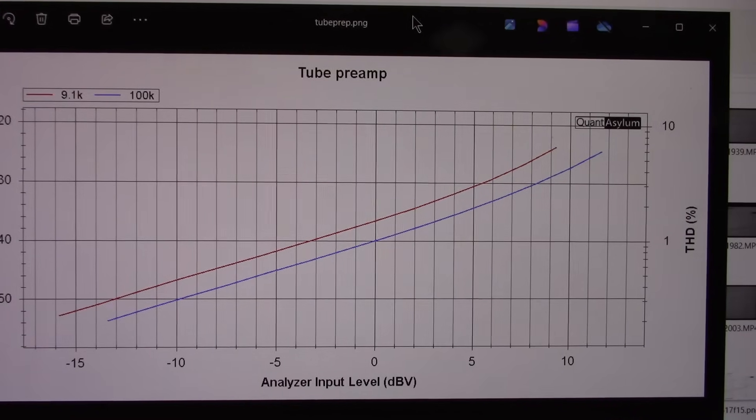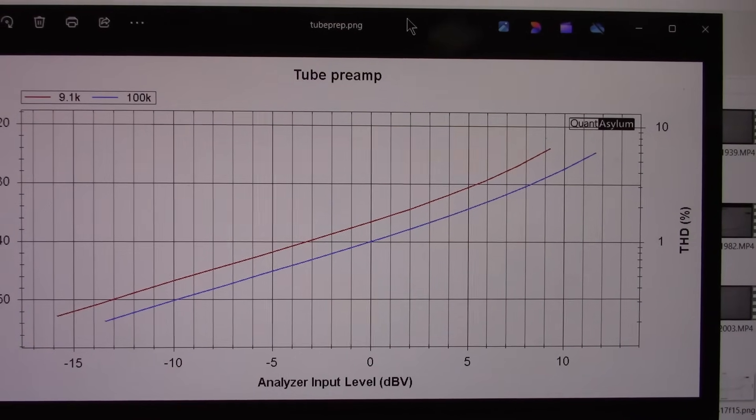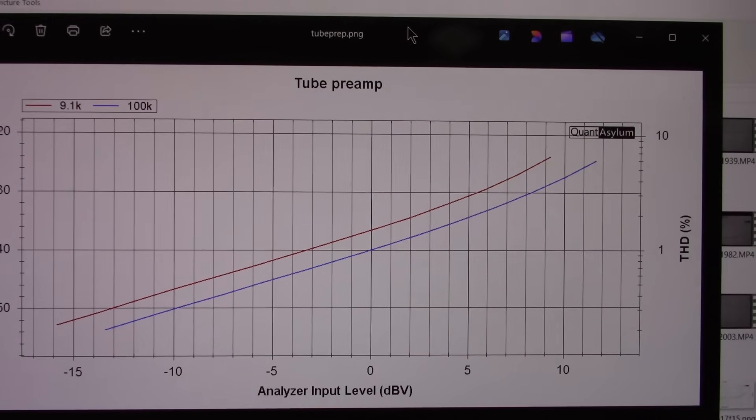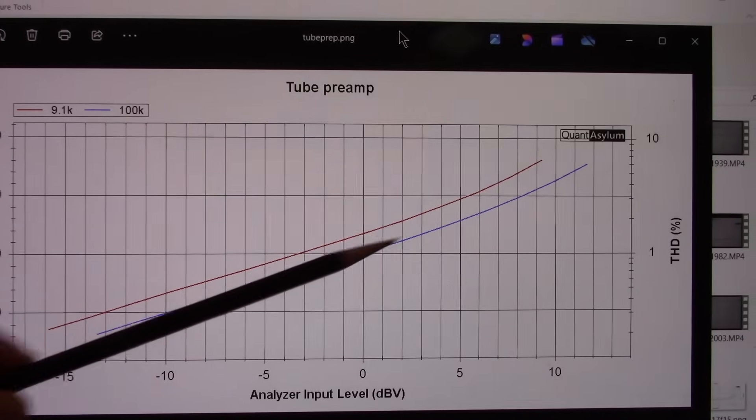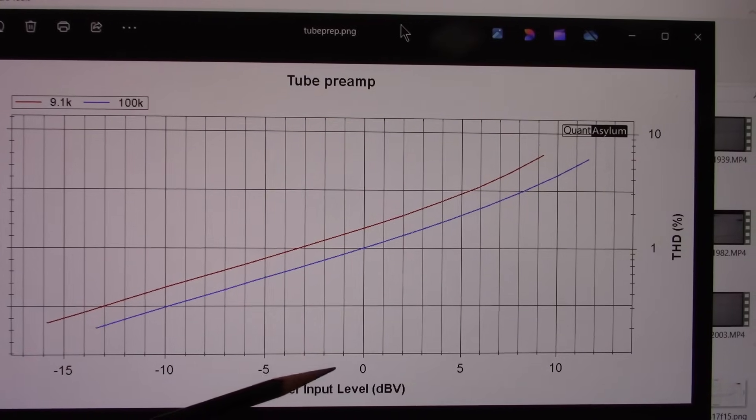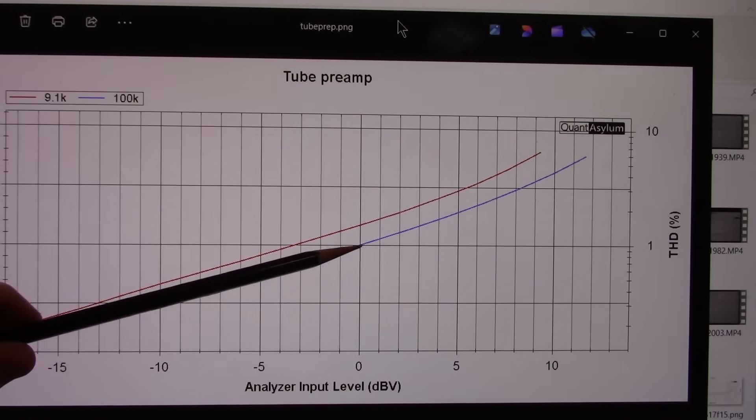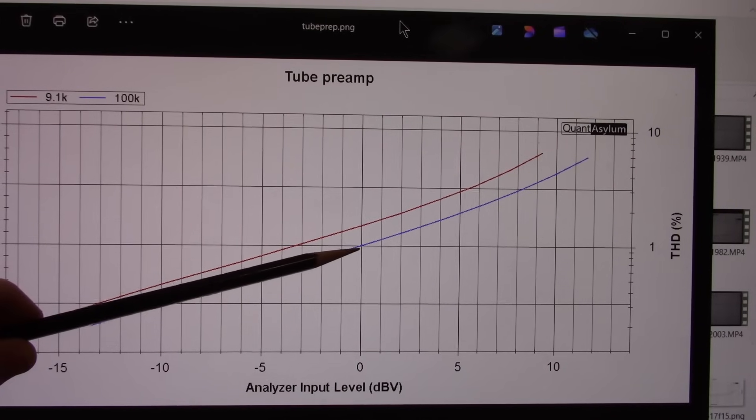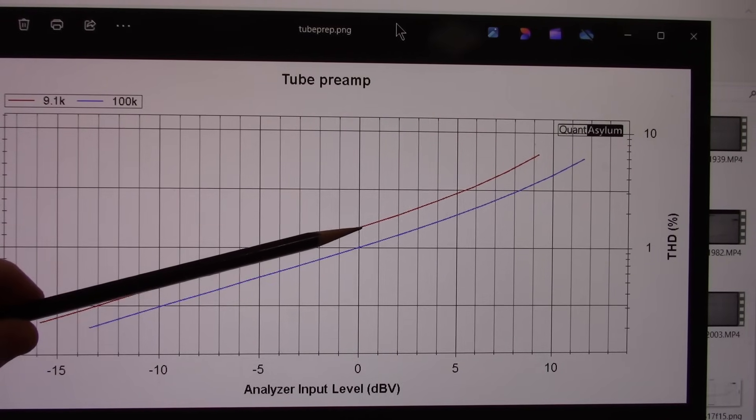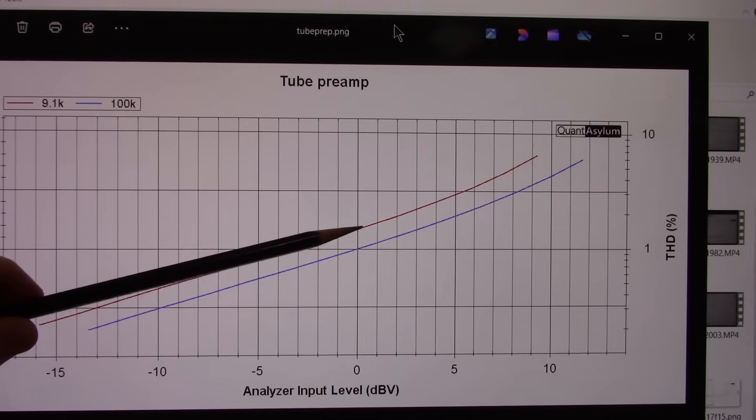Output level of the preamp, which is the analyzer's input, versus distortion. You can see it's a steady climb as the signal gets higher. As we saw before, at 0 dBV, we were at 1%. At 100k and at 9.1k, we're about 1.5%.